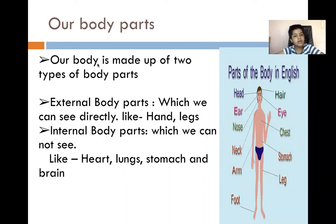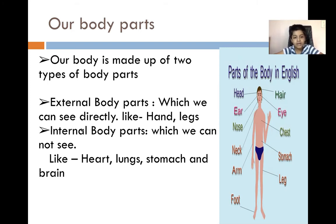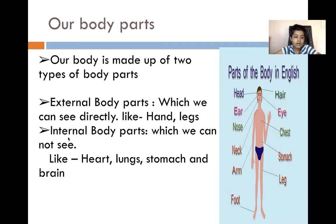Our body is made up of two types of body parts. External body parts, which we can see directly, like hands and legs. Internal body parts, which we cannot see, like heart, lungs, stomach, and brain.